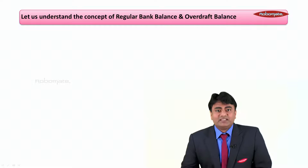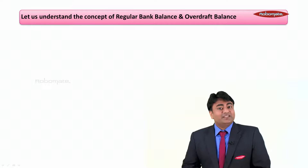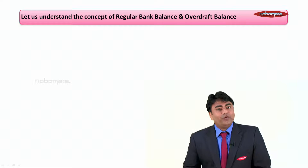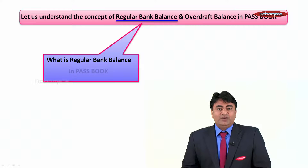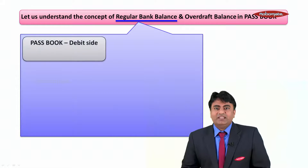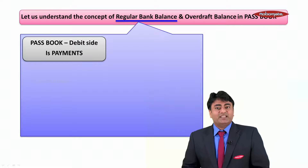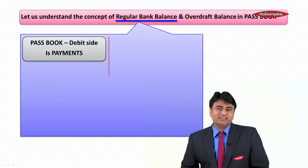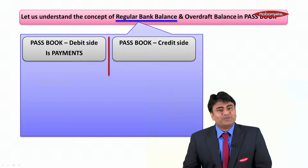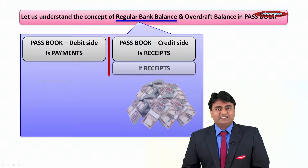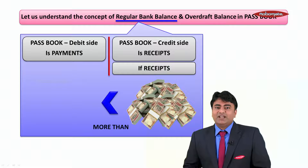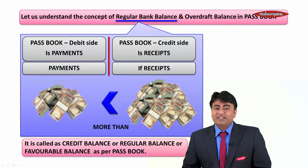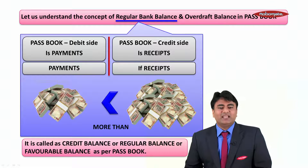The next concept is regular bank balance and overdraft balance in the pass book. What is the regular bank balance in the pass book? The pass book debit side is payments and the credit side is receipts. If receipts are more than payments, it is called a credit balance, or regular balance, or favorable balance as per the pass book.